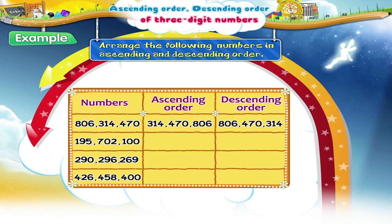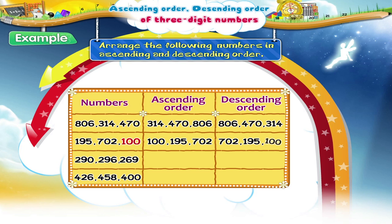For the second set of numbers, the ascending order is 100, 195, and 702. And the descending order is 702, 195, and 100.